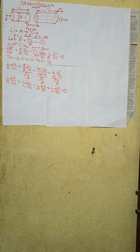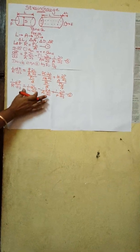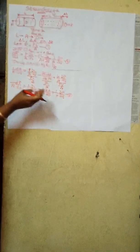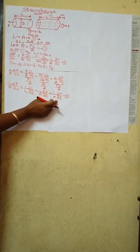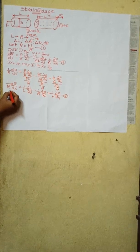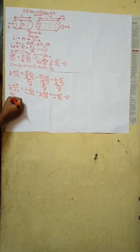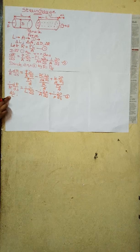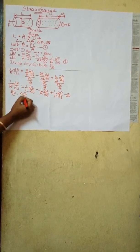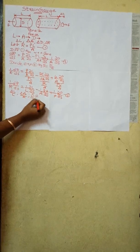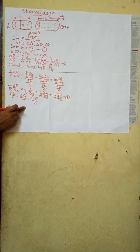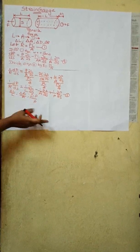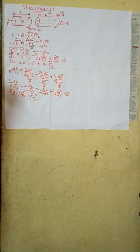So in this expression you are getting a per unit change in length, per unit change in area, and per unit change in resistivity. ΔL/L is called the per unit change in length, ΔA/A is the per unit change in area, and Δρ/ρ is the per unit change in resistivity. Under strained condition, the cross-sectional area of the conductor changes, so the diameter of the conductor also changes.